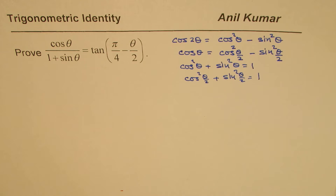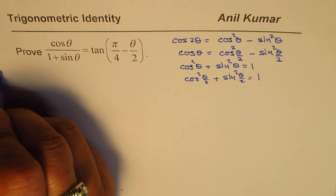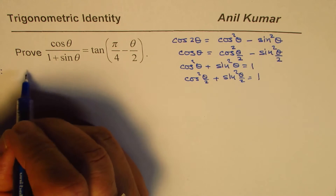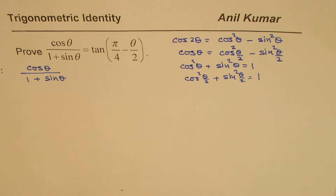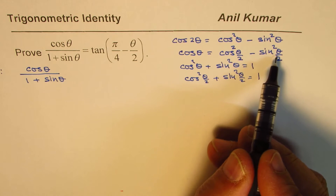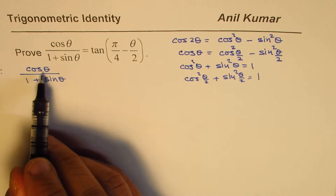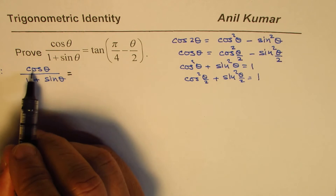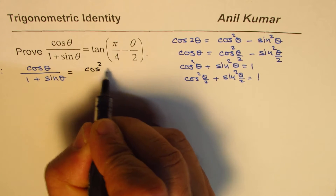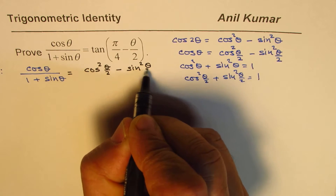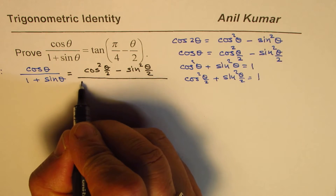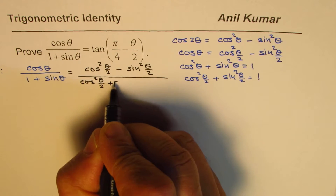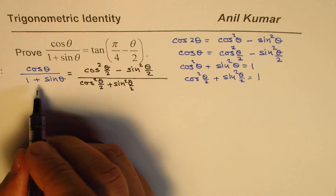Now let's get back to the question. On the left side, we are given cos θ over 1 plus sin θ. We replace cos θ by cos²(θ/2) minus sin²(θ/2), using the modified double-angle formula. In the denominator, we replace 1 by cos²(θ/2) plus sin²(θ/2), and we still have the sin θ term to handle.